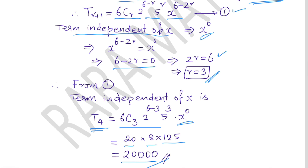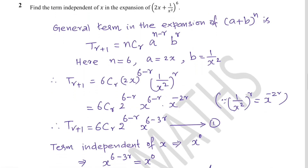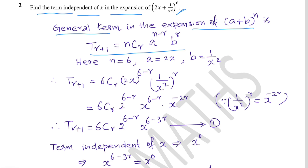Example 2: Find the term independent of x in the expansion of (2x + 1/x²)^6. Using the same general term formula, n = 6, a = 2x, b = 1/x². Substituting: T(r+1) = 6Cr · (2x)^(6−r) · (1/x²)^r.